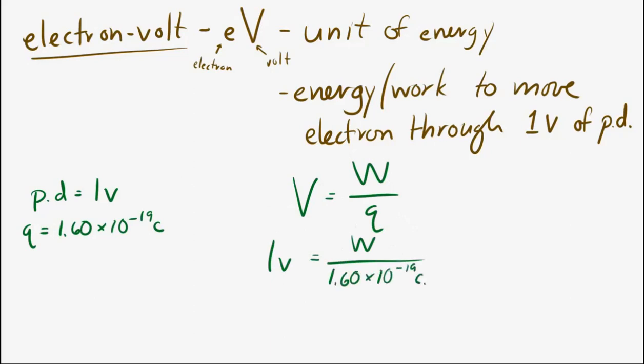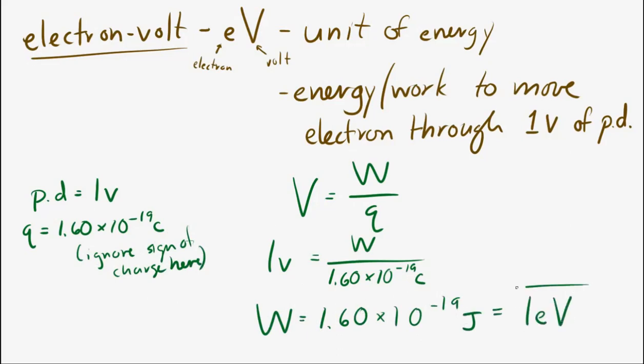It's not much. It's very little. 1.6 times 10 to the minus 19 joules. That is very small. So one electron volt is the same as 1.60 times 10 to the minus 19 joules. That's a very, very small amount of energy.